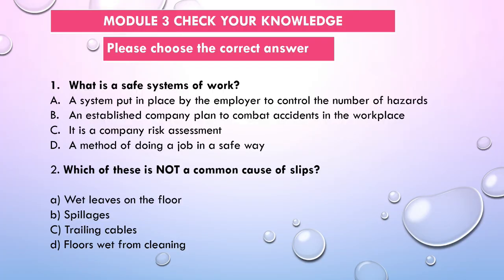I hope you have enjoyed this session. For the Module 3 knowledge check, choose the correct answer. Question 1: What is a safe system of work? A) A system put in place by the employer to control the number of hazards, B) An established company plan to combat accidents in the workplace, C) A company risk assessment, D) A method of doing a job in a safe way.